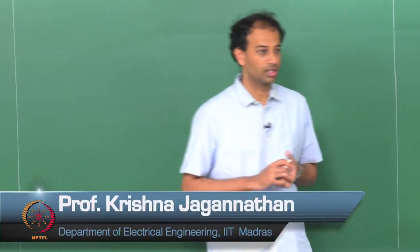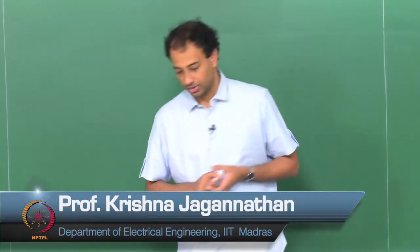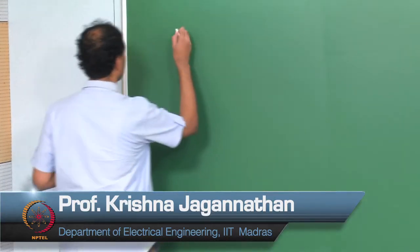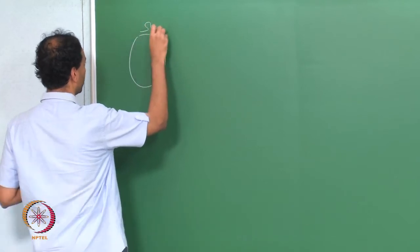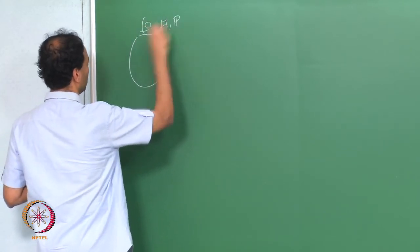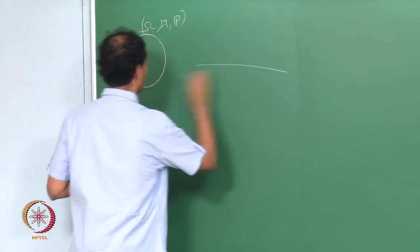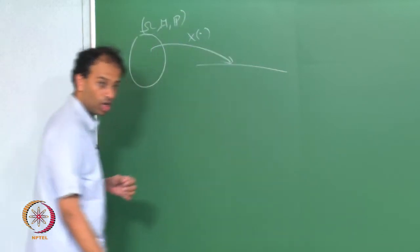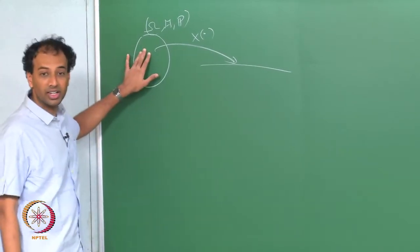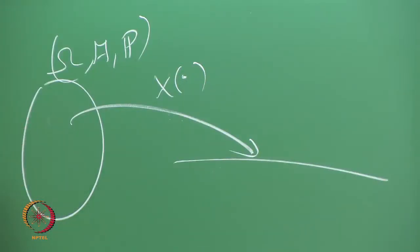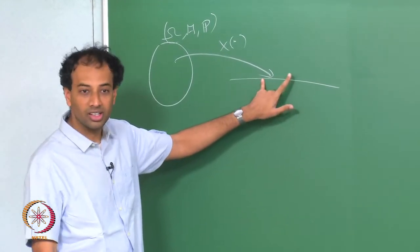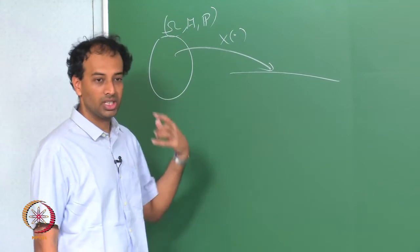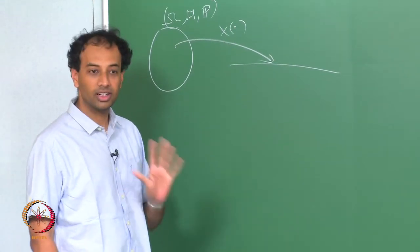Today we will continue discussing CDFs. So yesterday we said: we have a probability space omega F P, and a random variable is a measurable function on this space, which is just saying that if you take any Borel set on the real line the pre-image of that Borel set must be an event. That is what a random variable is.